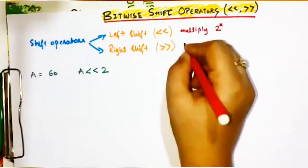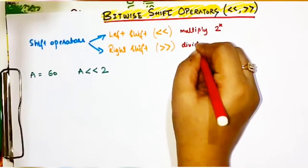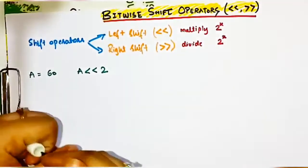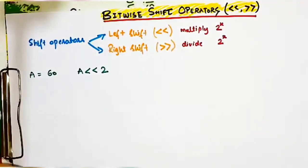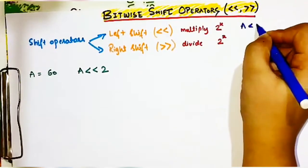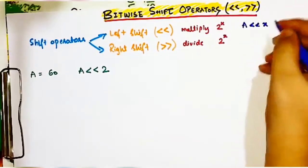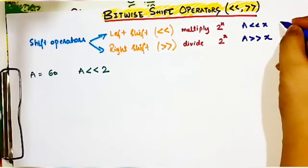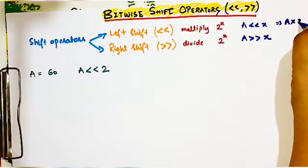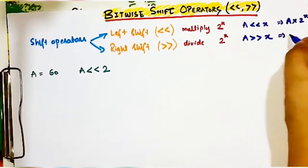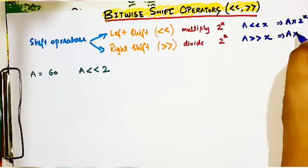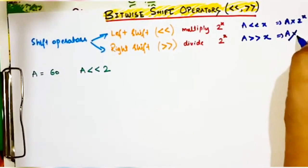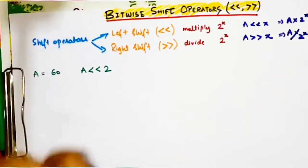The trick is: for left shift written as a << x, the result is a multiplied by 2 to the power x. For right shift written as a >> x, the result is a divided by 2 to the power x. So left shift equals a × 2^x, and right shift equals a / 2^x.